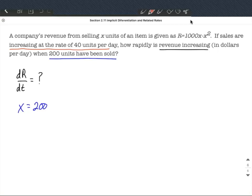Now we're also told sales are increasing, so the number of units we're selling, dx/dt, are increasing at a rate of 40 units per day. Alright, so 40, positive 40, because it's increasing.